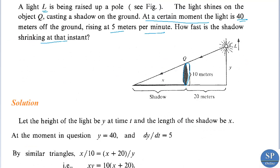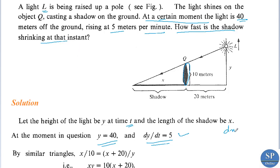Let y be the height of the light and t be the time, and let the length of the shadow be x. So this length is x. We are given that at that moment y equals 40 and dy by dt equals 5, that is y is rising at 5 meters per minute. We have to find how fast the shadow is shrinking at that instant, that is, we have to find dx by dt.